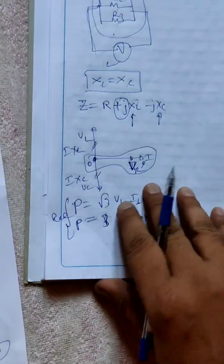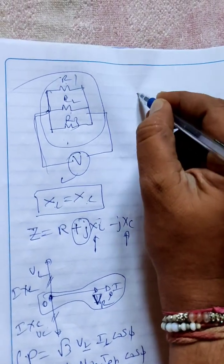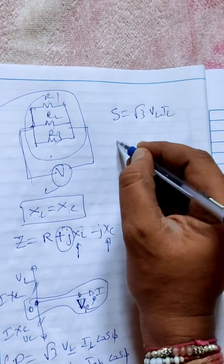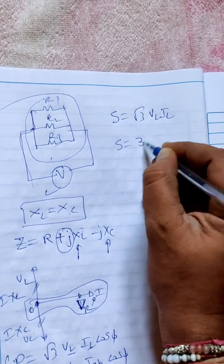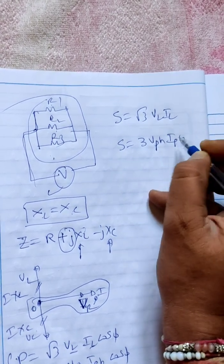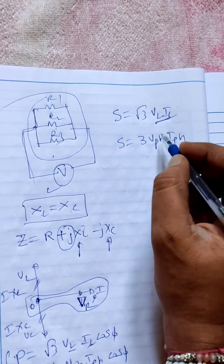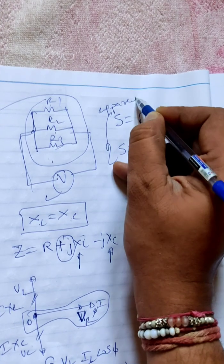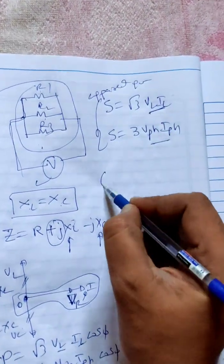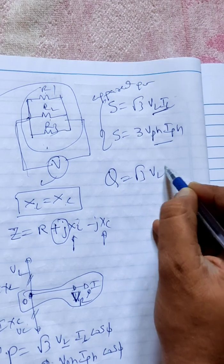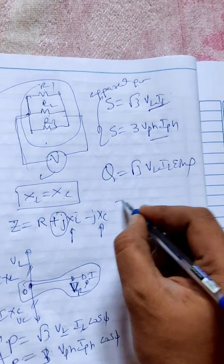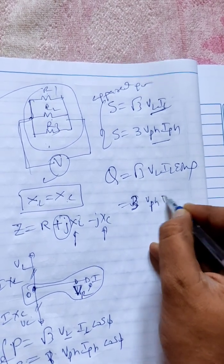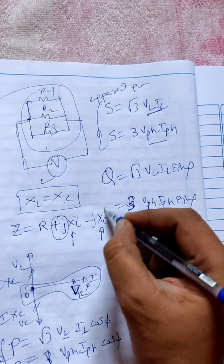What they asked is apparent power. Apparent power formula for three-phase is root three VL into IL, which is correct. Otherwise, three times VPh into IPh - this formula in terms of line quantities, this formula in terms of phase quantities. This is called apparent power. One more power is reactive power, that formula is root three VL IL sin phi.